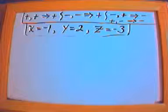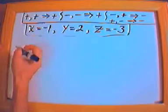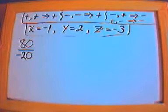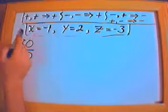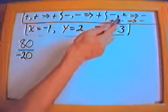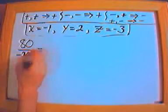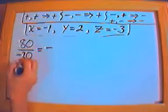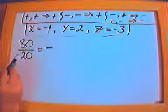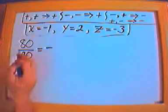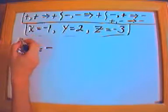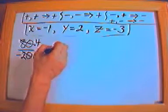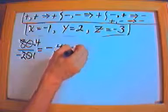Now let's do some simplifying of fractions. What if I have 80 over negative 20? Remember the rules are the same: if you divide a positive by a negative, you always get a negative — same as multiplying a positive by a negative. So I automatically put a negative out here. Then I simplify the fraction: 20 divided by 20 is 1, and 80 divided by 20 is 4. So I'm left with negative 4 over 1, which is simply negative 4.